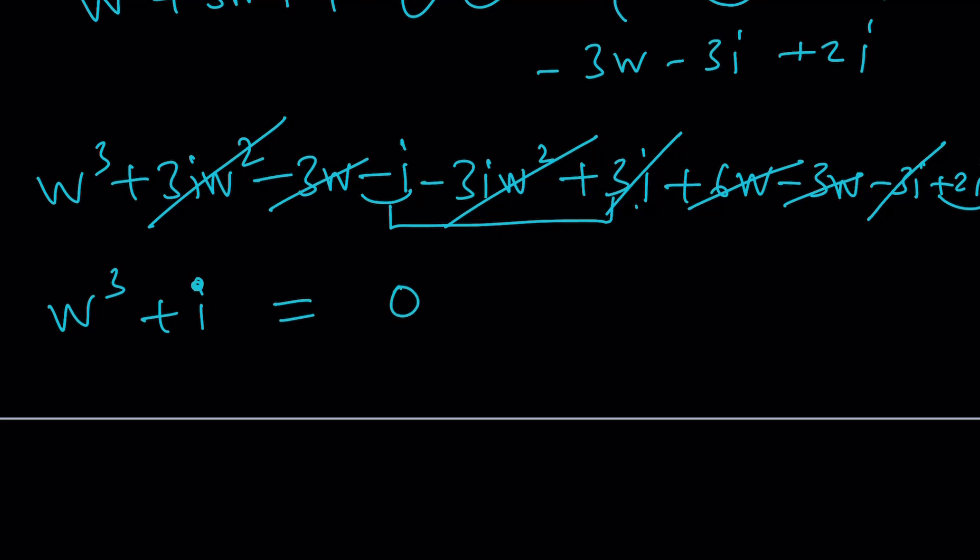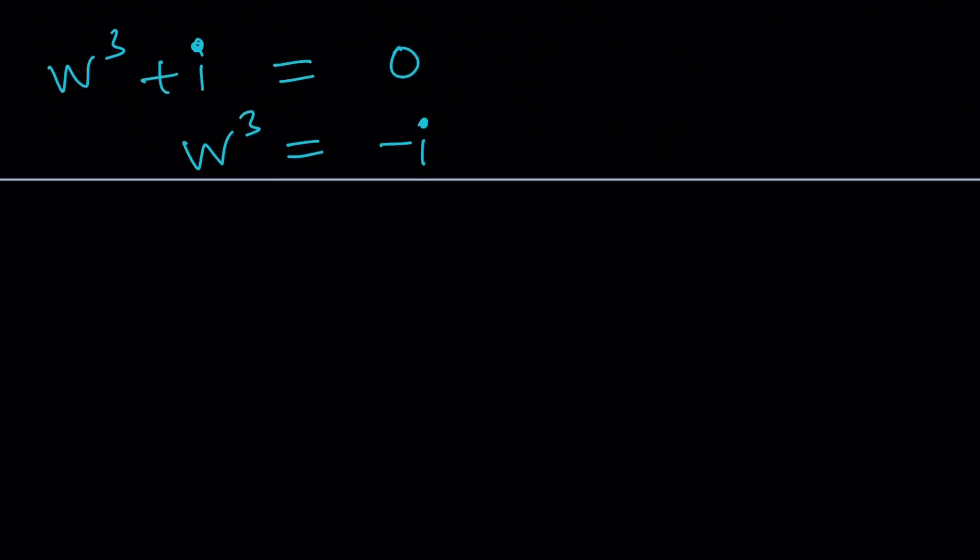This is awesome. You know why? We were supposed to replace w with something, but we don't even need it because now w cubed equals negative i. So from here we can easily find w and then go to z from w. What does that entail? Well you have to think about the cube roots of negative i.